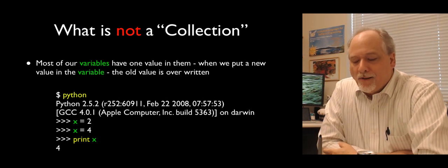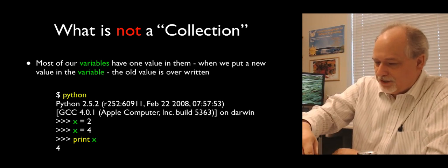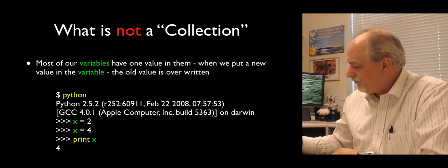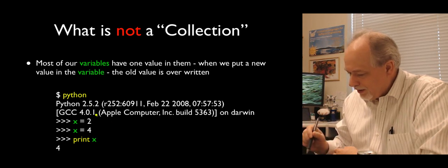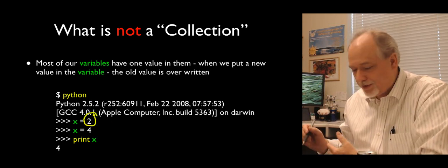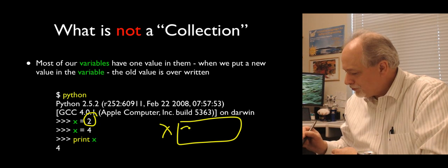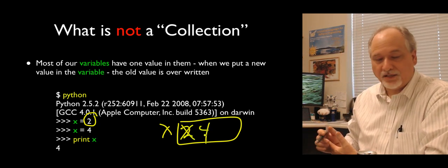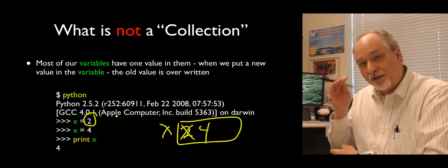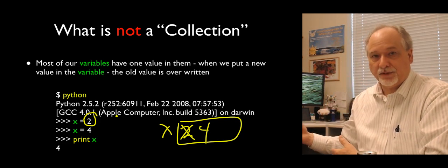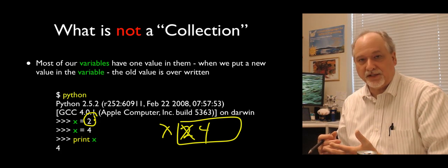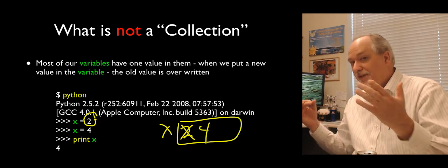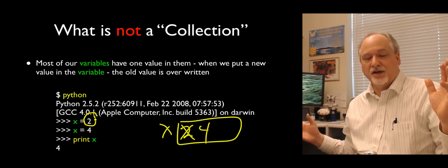If you look at the code, x equals 2 and x equals 4 — the question is, where did the 2 go? The 2 was there, x was there, there was a 2 in there, and then we cross it out and put a 4 in. This is the basic operation of the assignment statement — it's a replacement. But a dictionary allows us to have a variable that's really an aggregate of many values.